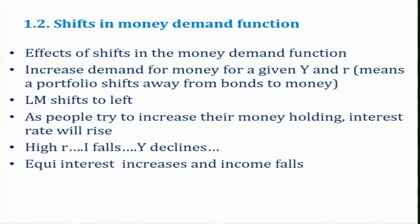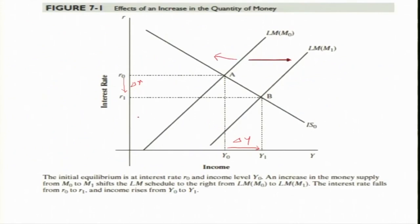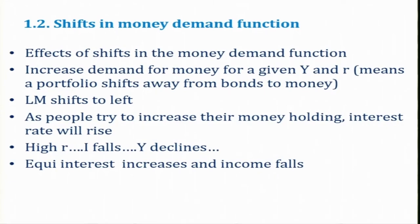More demand for money means people — other things remaining constant — are demanding more money due to uncertainty. In that case, the LM curve will be shifting leftwards. The LM curve shifts leftwards when there is an increase in liquidity preference. As a result, the corresponding decrease in income is del Y — that is a declining Y. This much decrease in income will occur due to a shift in the money demand function — that means an increase in money demand, an increase in liquidity preference.